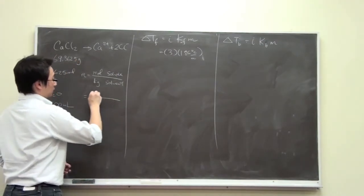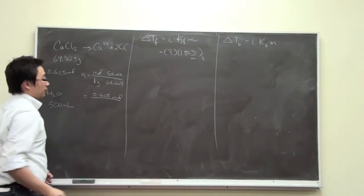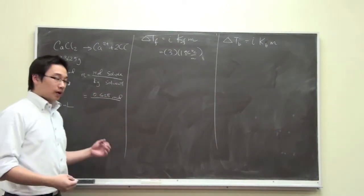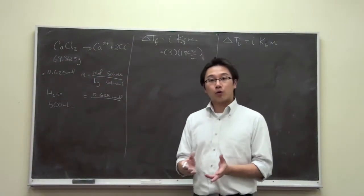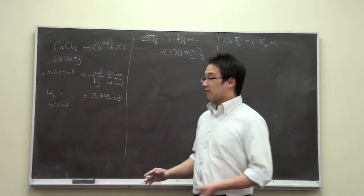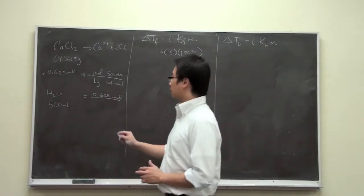So we are going to put the moles right here. Now for the kilograms of solvent, we have 500 ml. And the density of water is 1 gram per ml. So we have 500 grams. We can convert the 500 grams to kilograms.